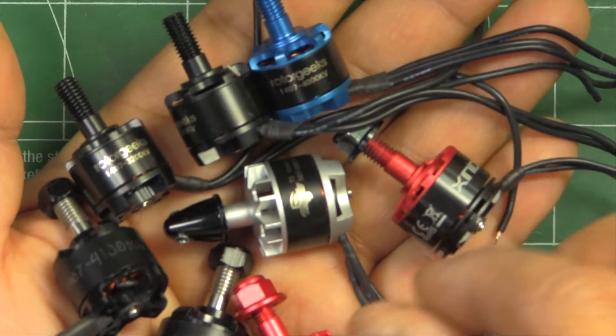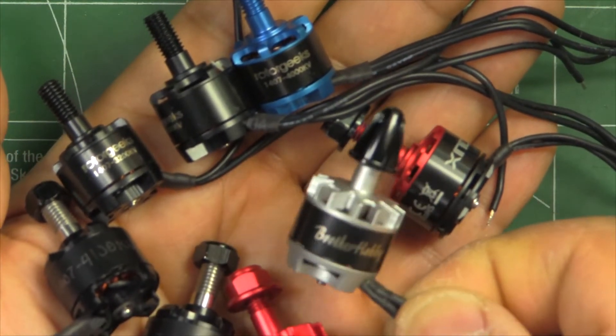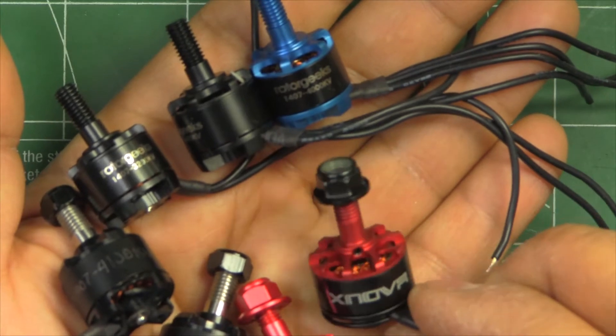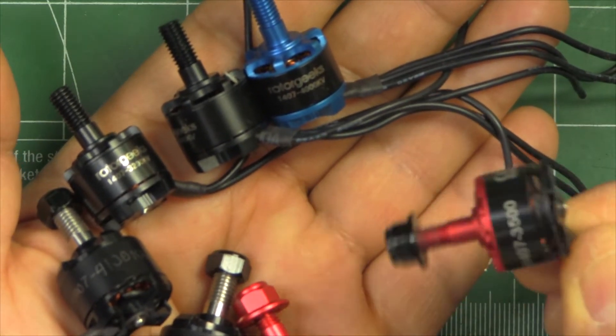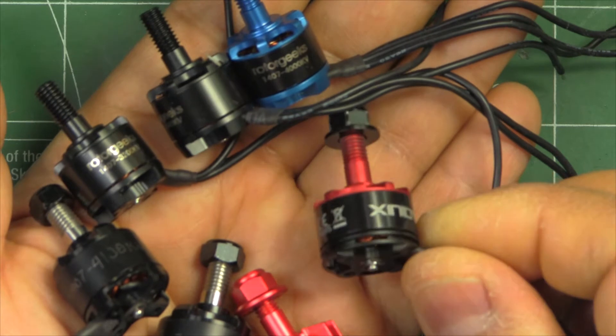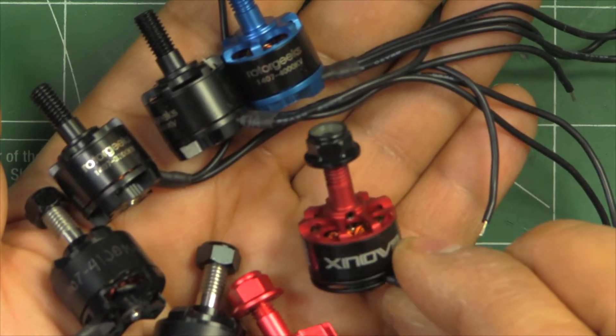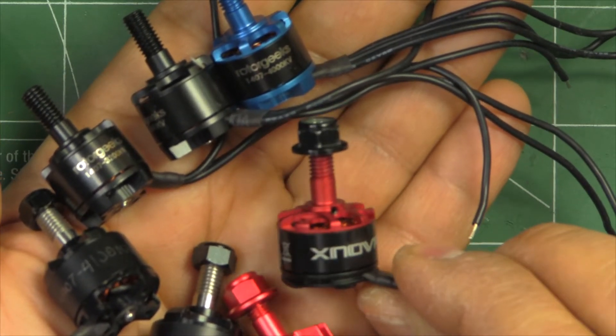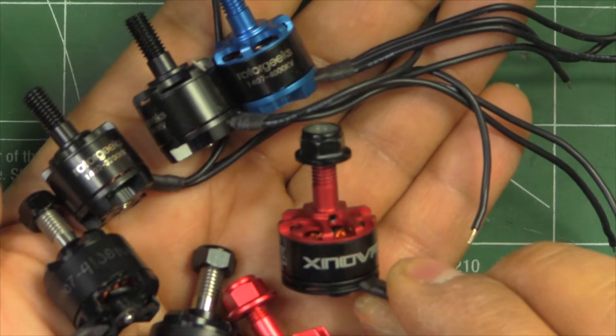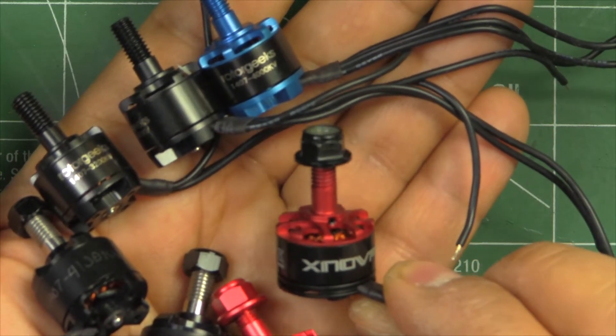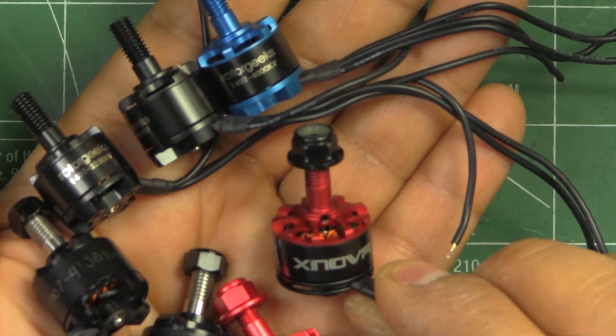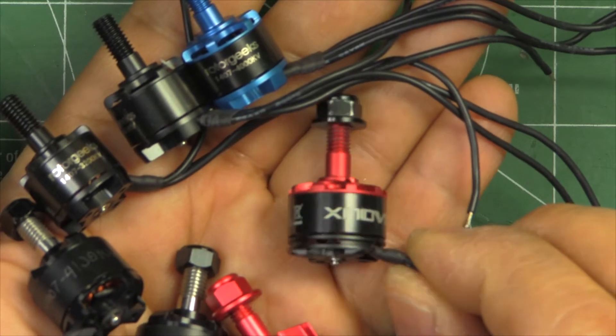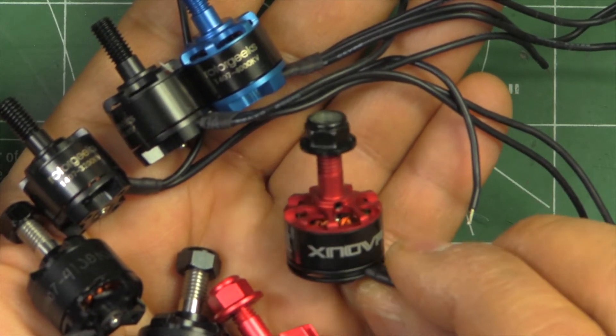Also got the Xnova 1407 3500. This one's courtesy of B Bailey from RC Groups, who kindly had it shipped from My Main Hobby directly to me so I could run it through the usual tests: 3-inch on 4S and 3S, and also tried the 4-inch on 4S.